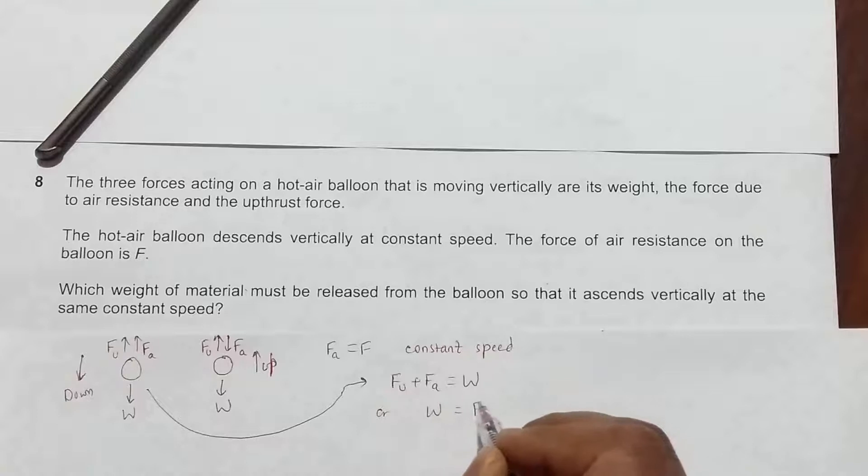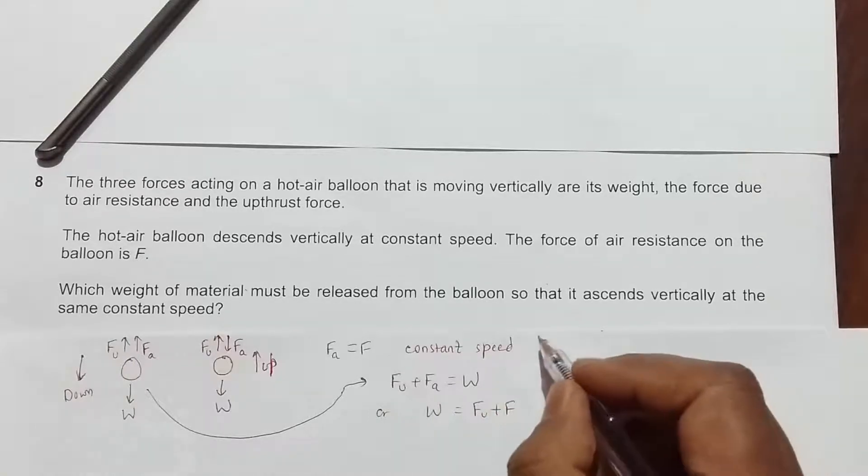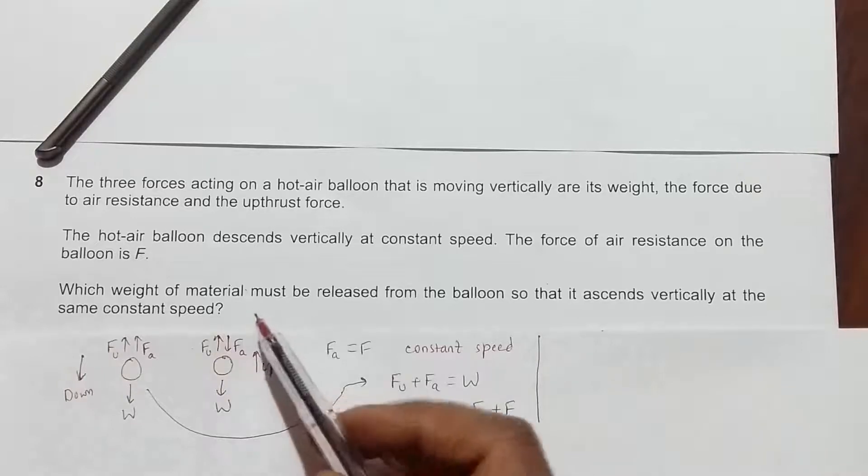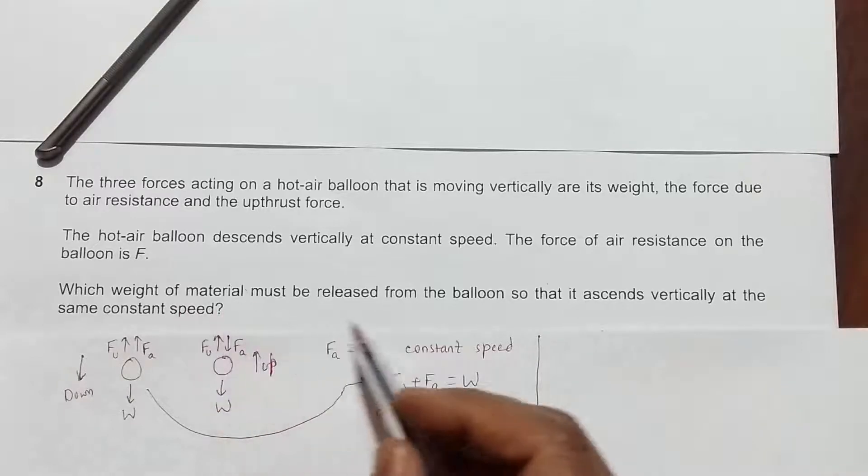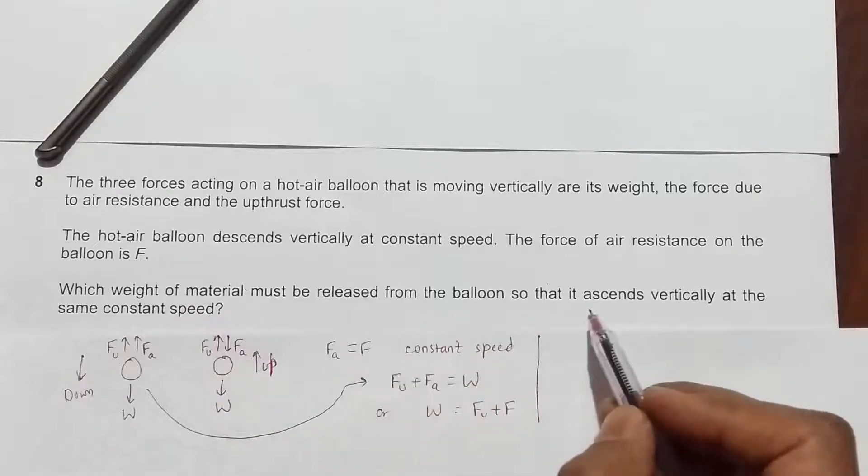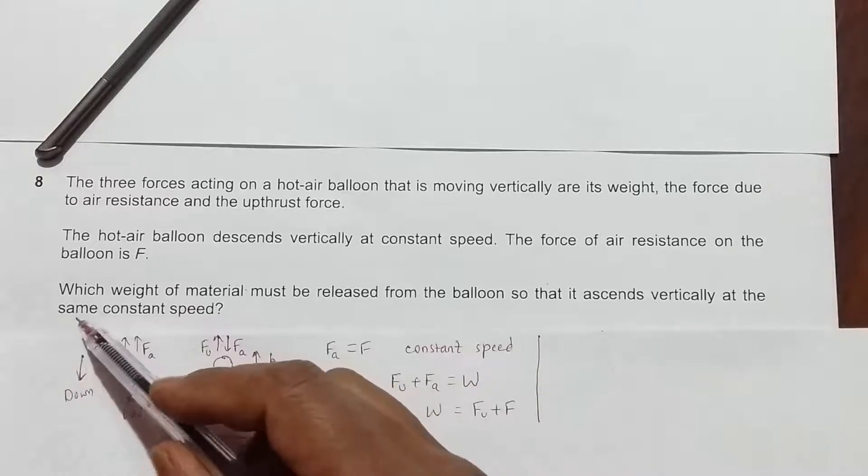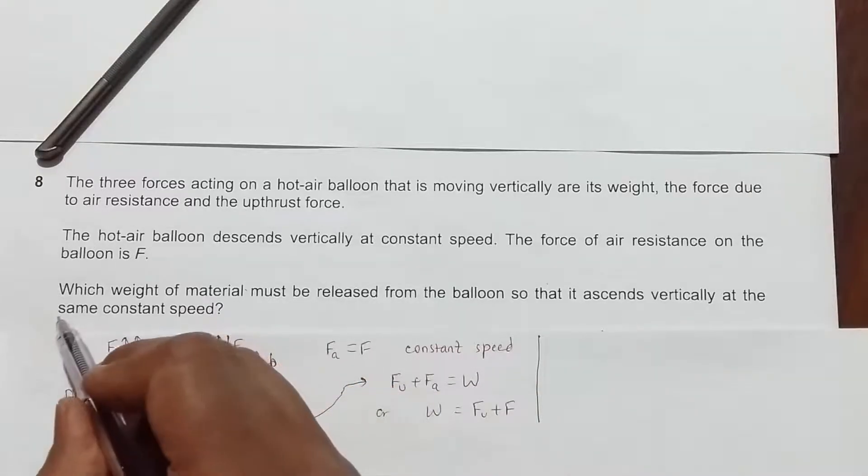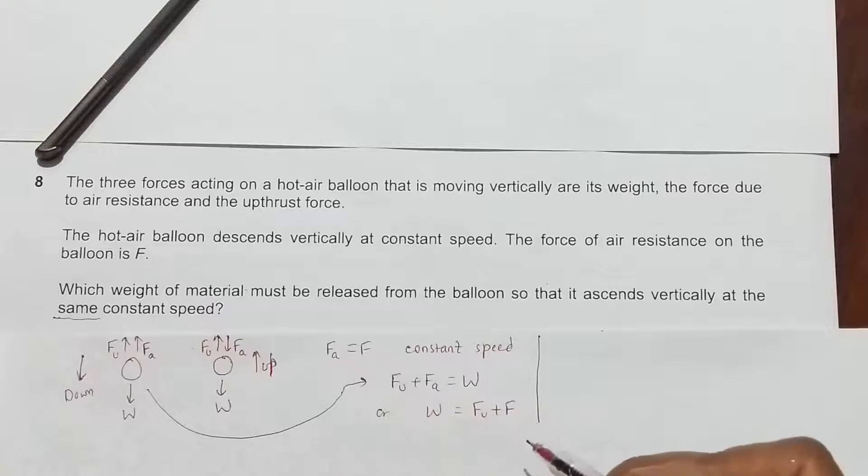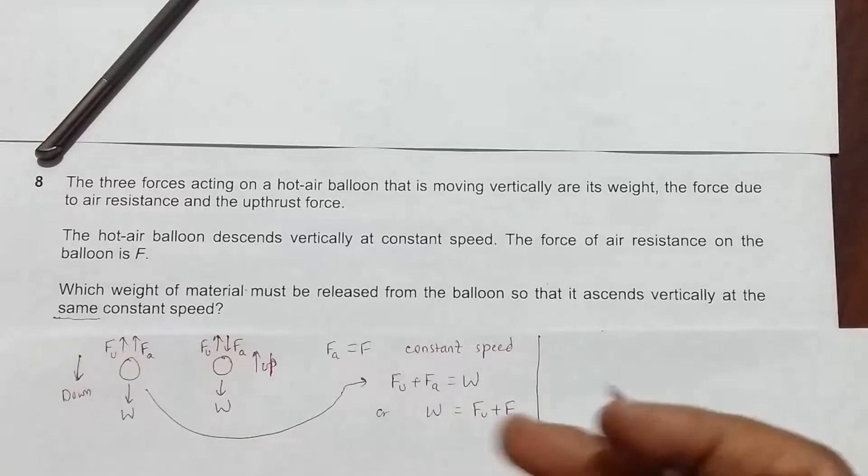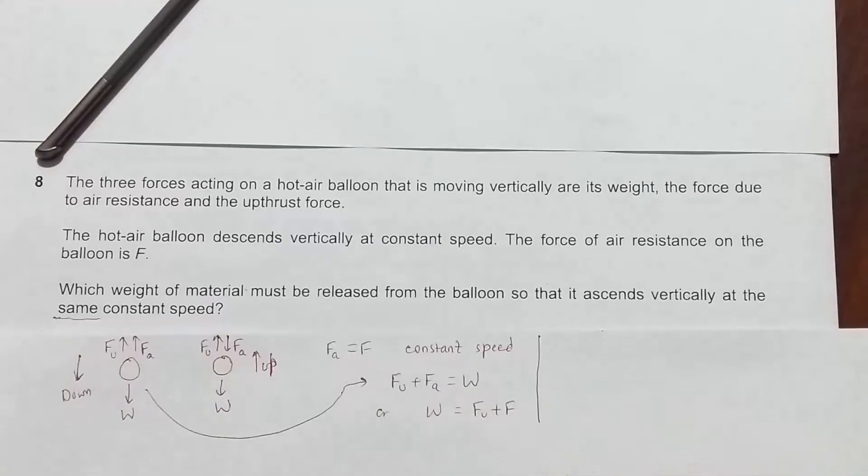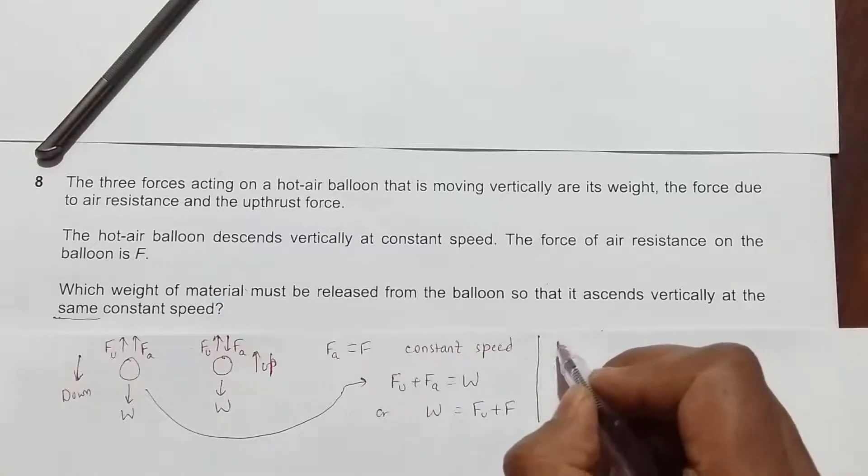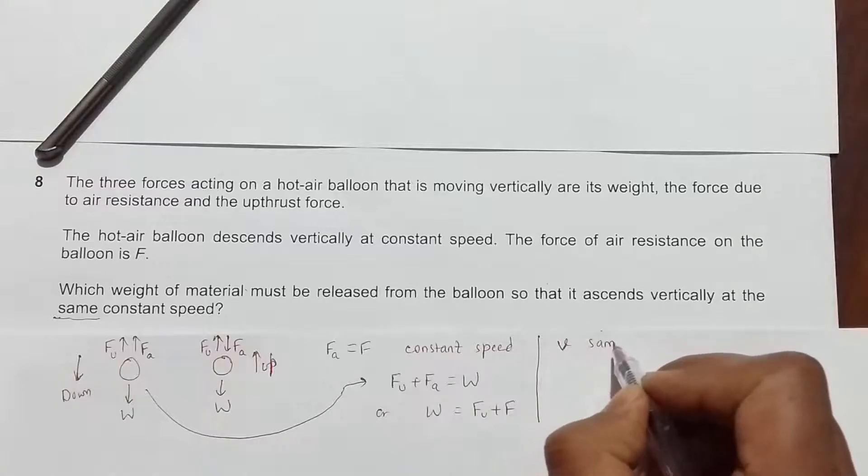In the second case, what weight of material must be released from the balloon so that it ascends vertically at the same constant speed? We take out some mass here and because of that the body starts to ascend, but the velocity now is the same as before.